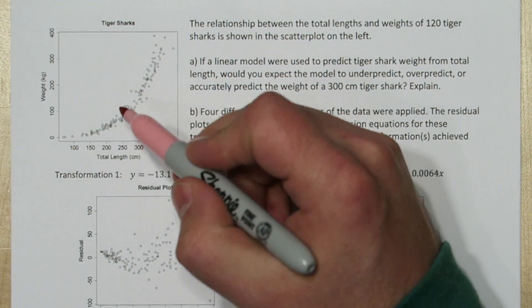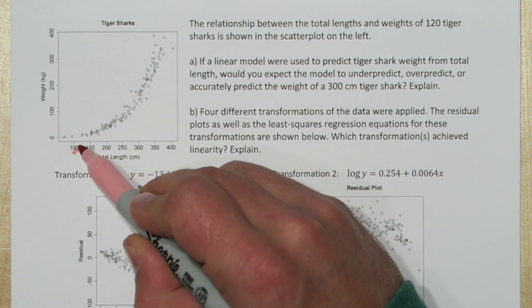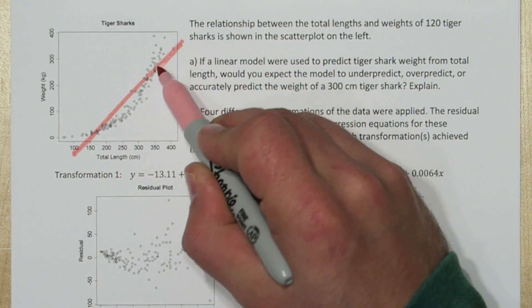This scatter plot has obvious curvature, but if we were going to try to fit a least squares regression line, maybe something like this.